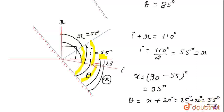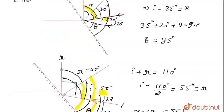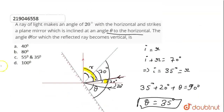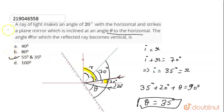So for this second case, theta equals 55 degrees, and for the first case, theta equals 35 degrees. Option C is the correct option: 55 degrees and 35 degrees. That is our answer. I hope you got the answer. Thank you.